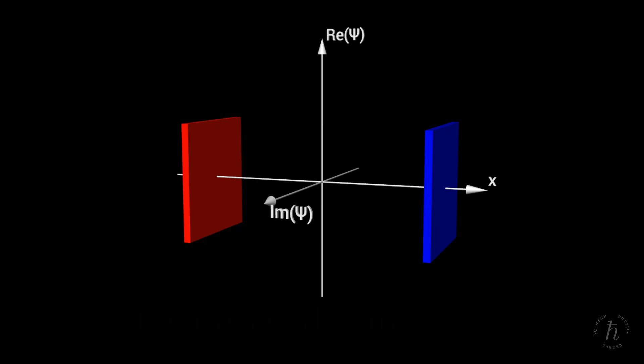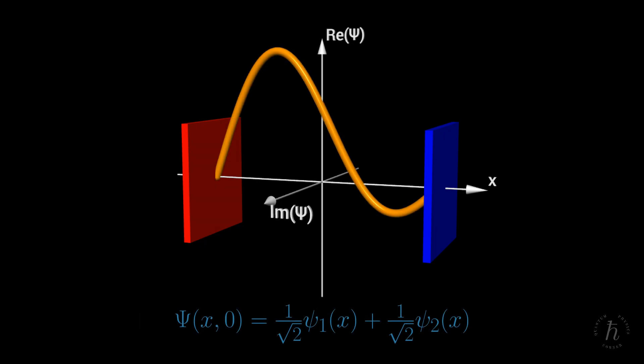We now consider a quantum state of the particle that at time zero is a superposition of the ground state and the first excited state, each taken with equal weight.